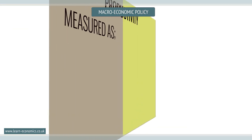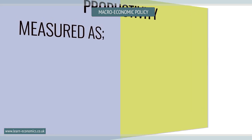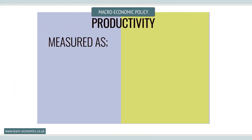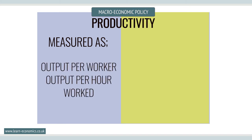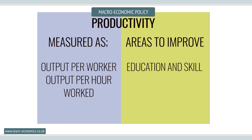Improving labour productivity is also seen as a key supply-side objective. Productivity is measured either as output per worker or output per hour worked. Three factors stand out as key areas for improvement. First, improving the level of education and skill of the workforce — given that education is a merit good, it is unlikely that the free market will supply a sufficient quantity, hence the significance of state involvement.